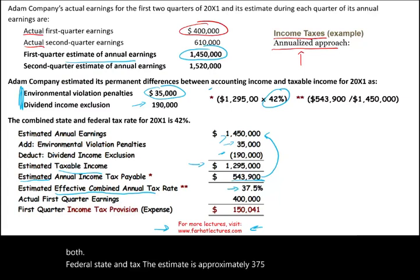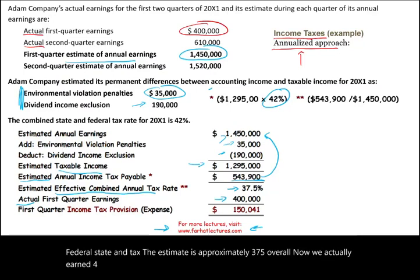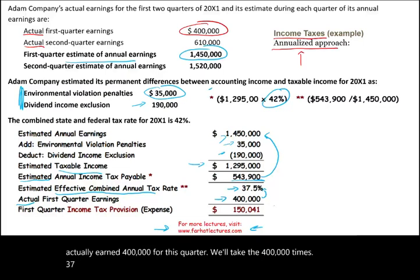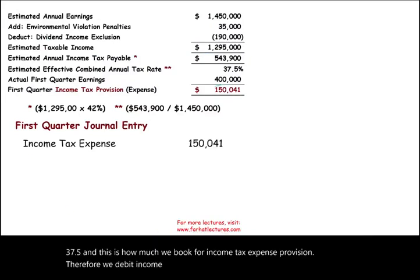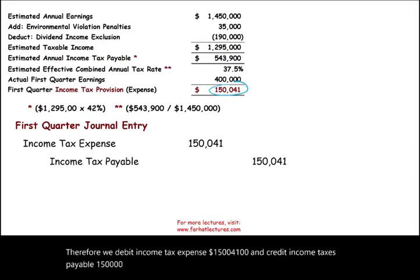We actually earned four hundred thousand in the first quarter. We take four hundred thousand times thirty-seven point five percent, and this is how much we book for income tax expense. Therefore we debit income tax expense one hundred fifty thousand forty-one dollars and credit income taxes payable one hundred fifty thousand forty-one dollars.